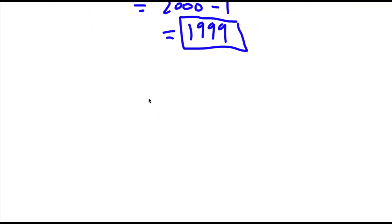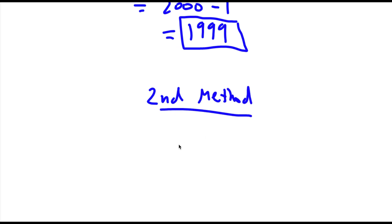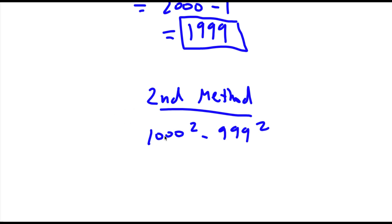Now my second method to solving this problem: we again start with 1000 squared minus 999 squared. Last time I replaced 999 with 1000 minus 1. This time I'm going to replace 1000 with 999 plus 1.